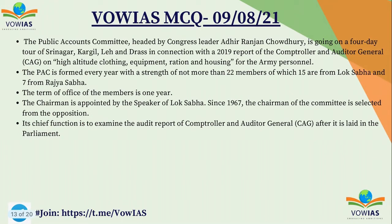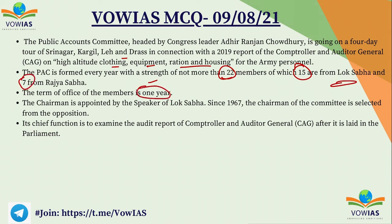The Public Accounts Committee, recently headed by Congress leader Adirajan Chaudhary, is going on a four-day tour to Sri Lanka, Kargil and Leh-Ladakh in connection with the 2019 CAG report on high altitude clothing, equipment, rationing and housing for army personnel. The committee is formed every year with not more than 22 members — 15 from Lok Sabha and 7 from Rajya Sabha — with an office term of one year. They are appointed by the Speaker of Lok Sabha. Since 1967, the chairman is generally selected from the opposition. Its chief function is to examine the CAG report submitted in parliament.